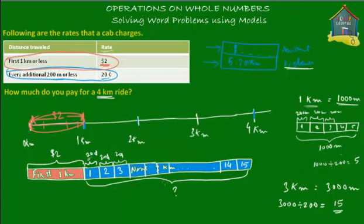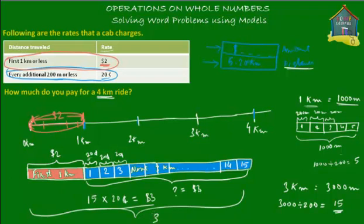Let's see how many 20-cent charges there are for the next three kilometers. There are 15 200-meter parts, and every part is chargeable at 20 cents. So the total is 15 times 20 cents, which equals 300 cents, or $3. So the question mark is equal to $3. For the entire four-kilometer ride — the pink part ($2) plus the blue part ($3) — you will pay a total of $5. That's the answer to this word problem.